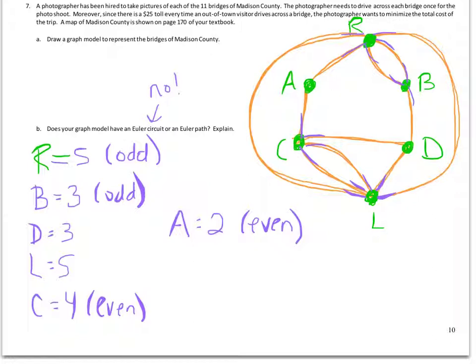Because I have some odd vertices. But to have an Euler path, all of my vertices have to be even, except for exactly 2. And I have more than 2 odds here. So I don't have a path either. So it's no circuit because I do not have all evens, and there's no path because I have more than 2 odds.